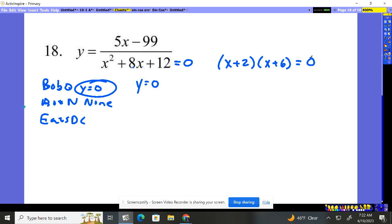So we set that equal to zero, then set each piece to zero. Solving it, subtract two, subtract two. So we're going to have one line at x equals negative two. Subtract six, subtract six. We're going to have another vertical line at negative six.